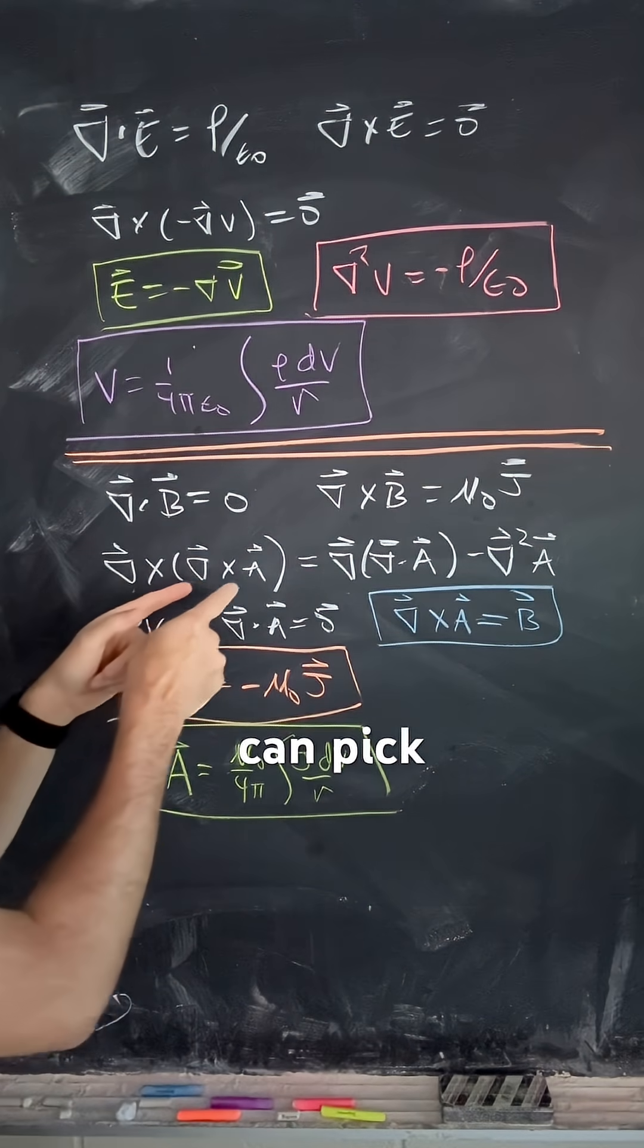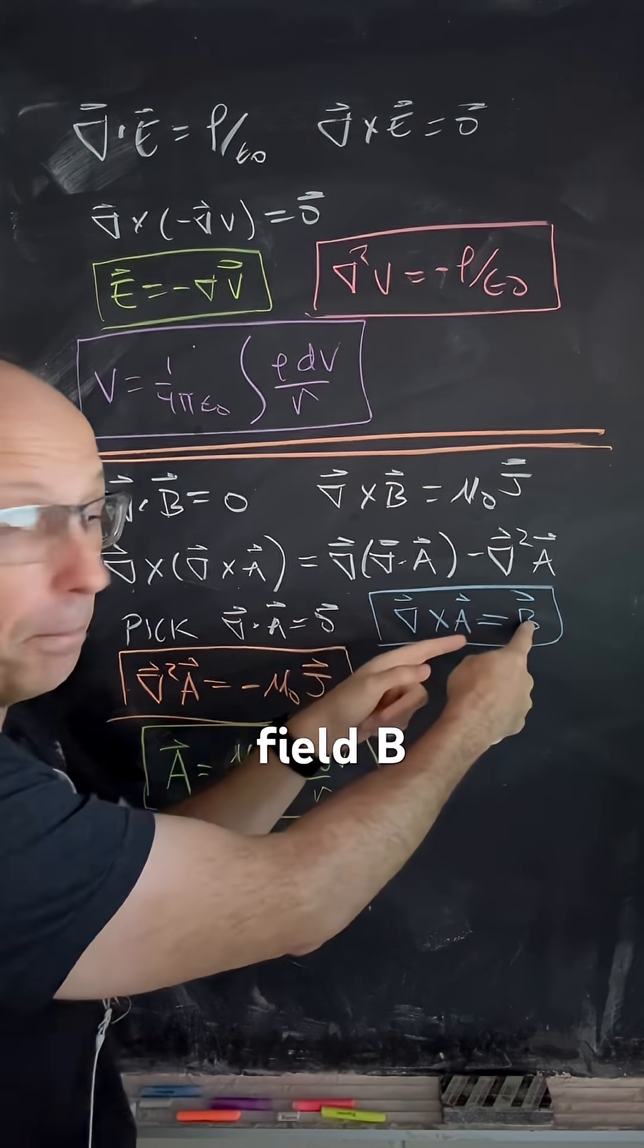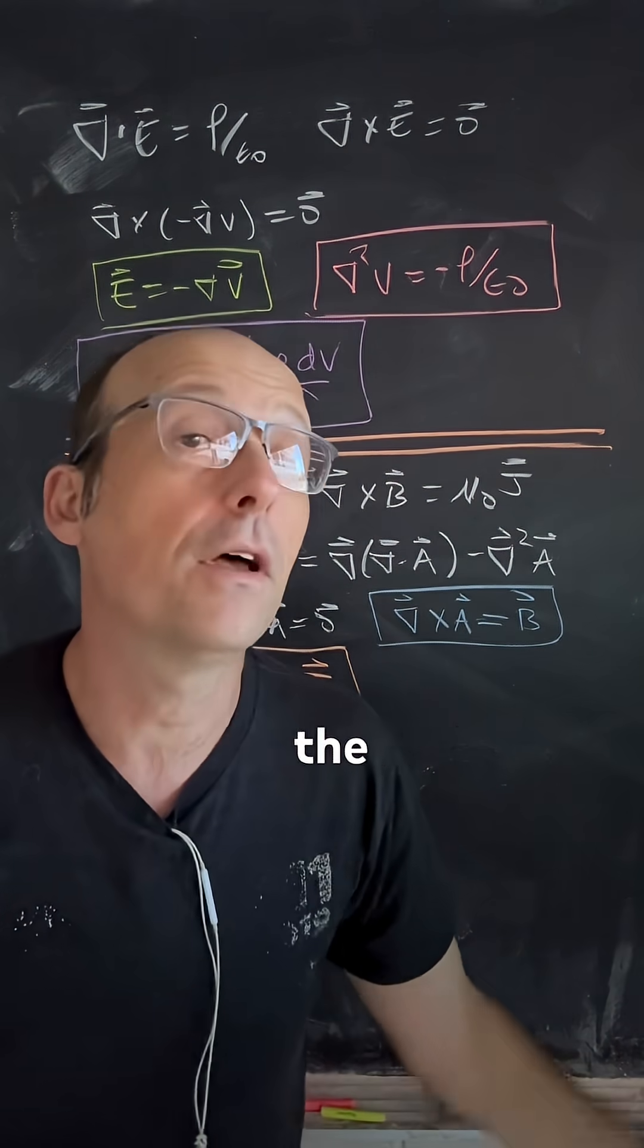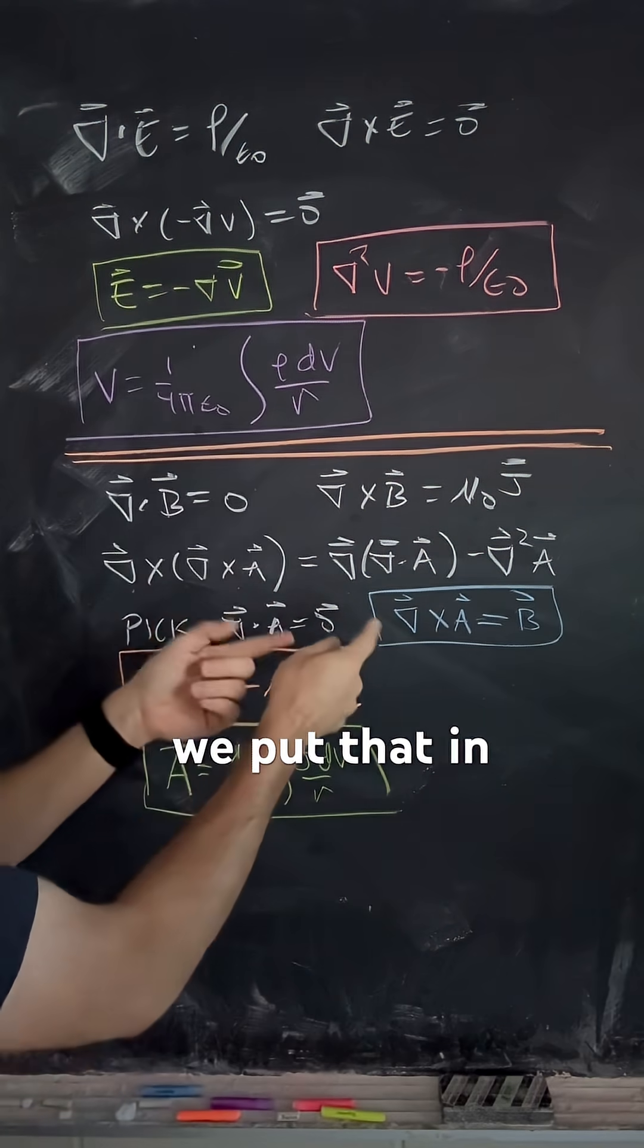Now, where are we with that? We can pick this. We can say the magnetic field B is the curl of some other function, vector function A, which we call the vector potential.